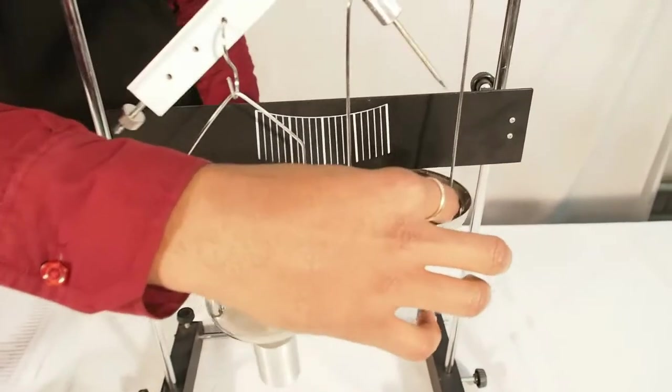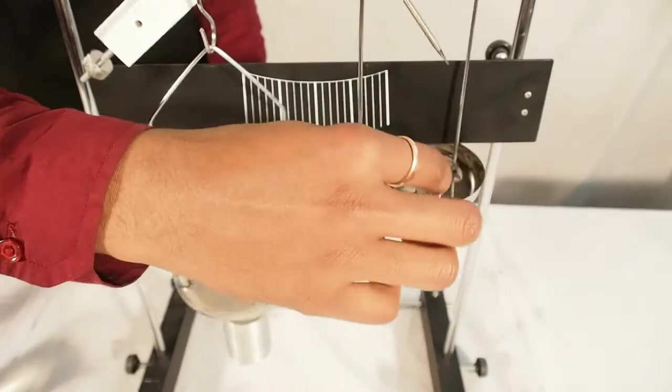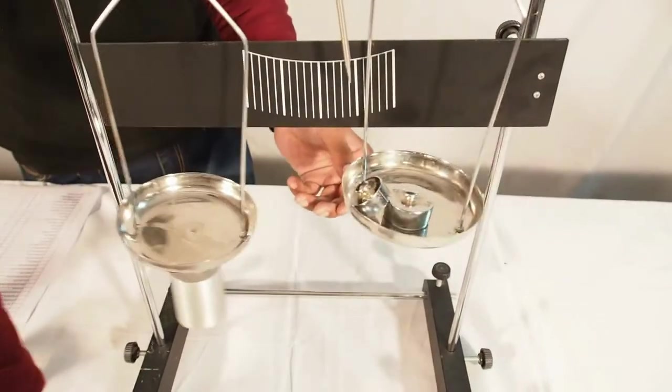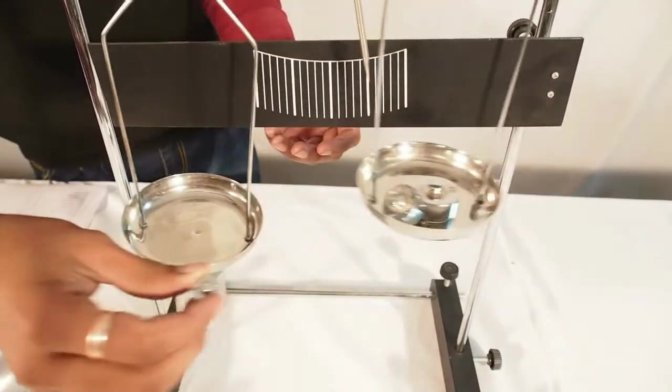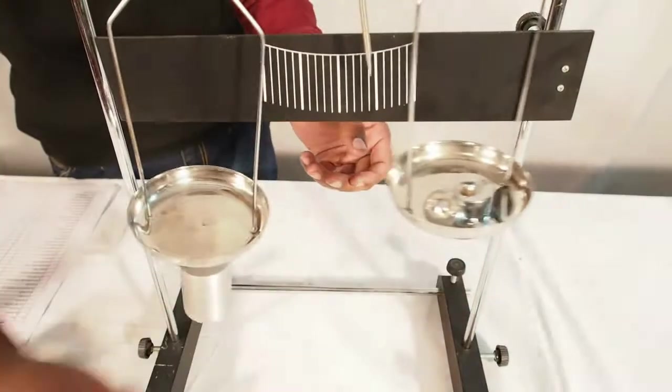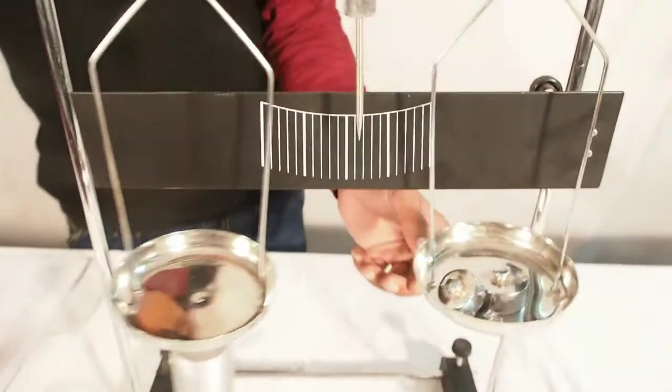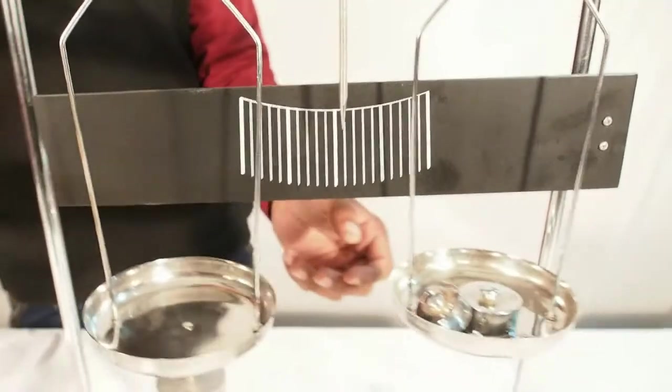The needle pointer therefore rotates to the right hand side. Put the weights on the right hand sided pan to counterbalance the weight of the solid aluminum cylinder hanging from the left sided pan. Note down the weights on the right sided pan. It is 156 grams.